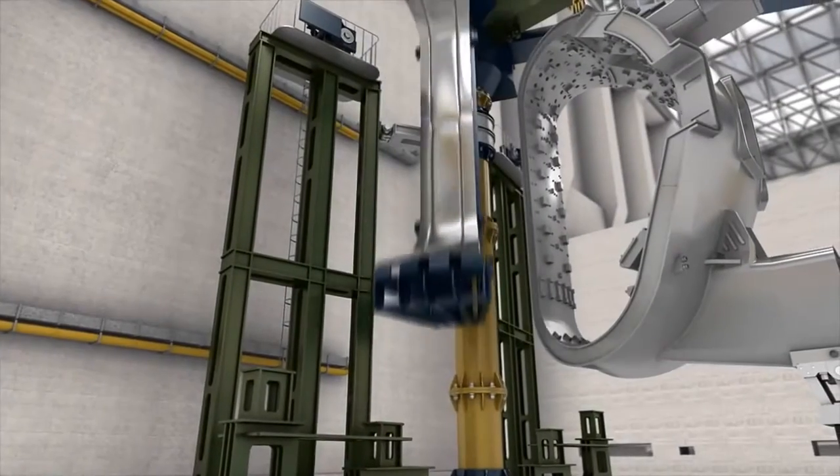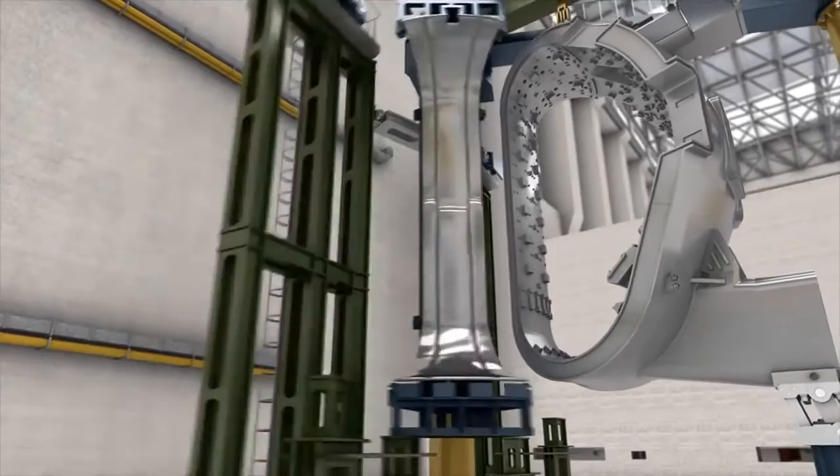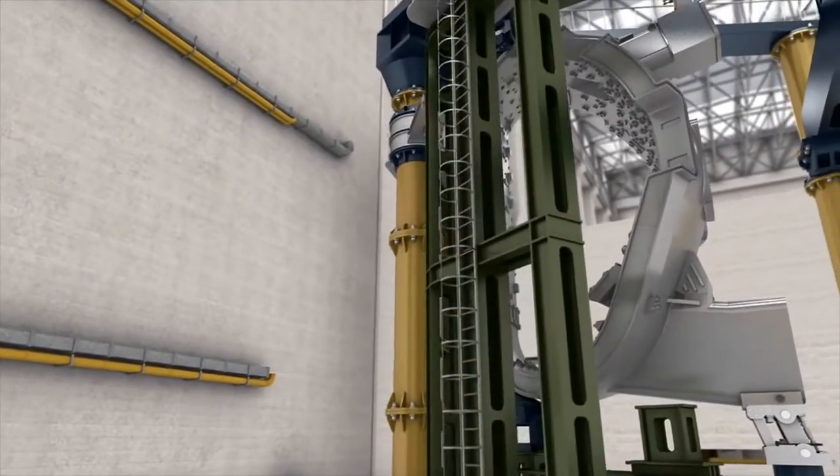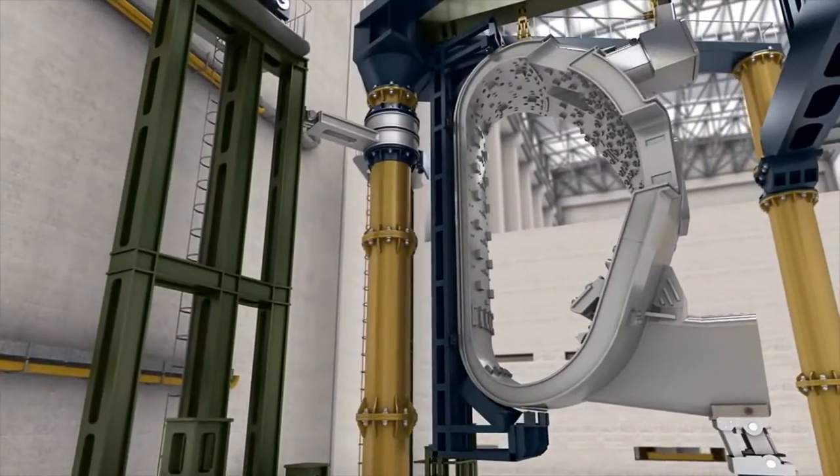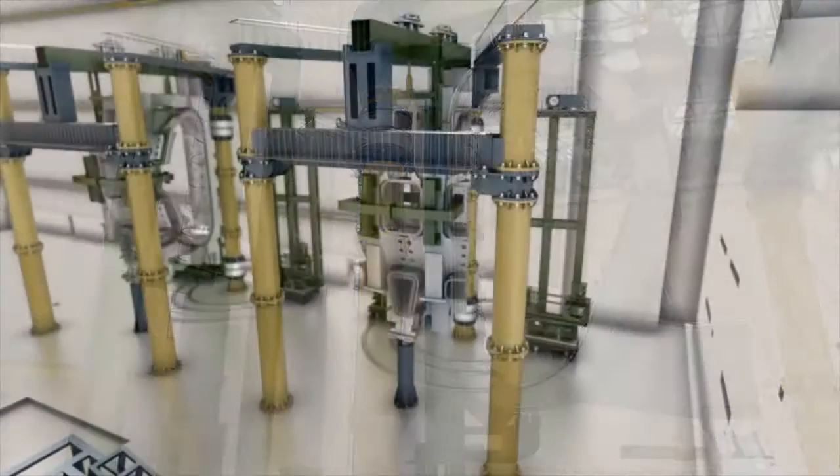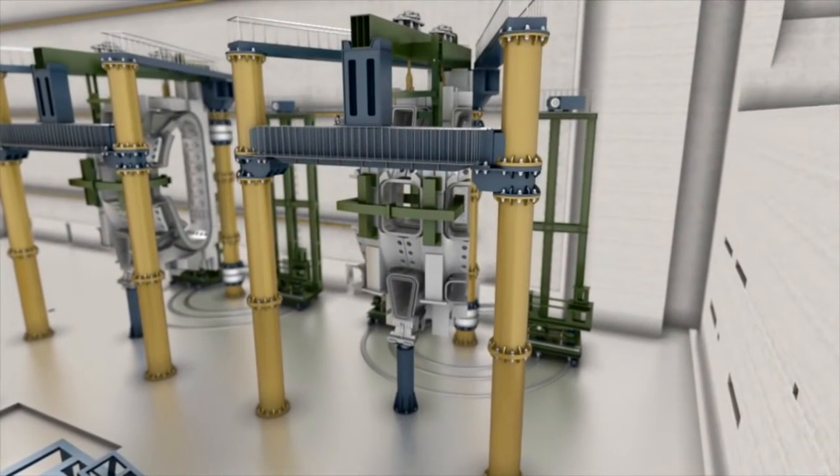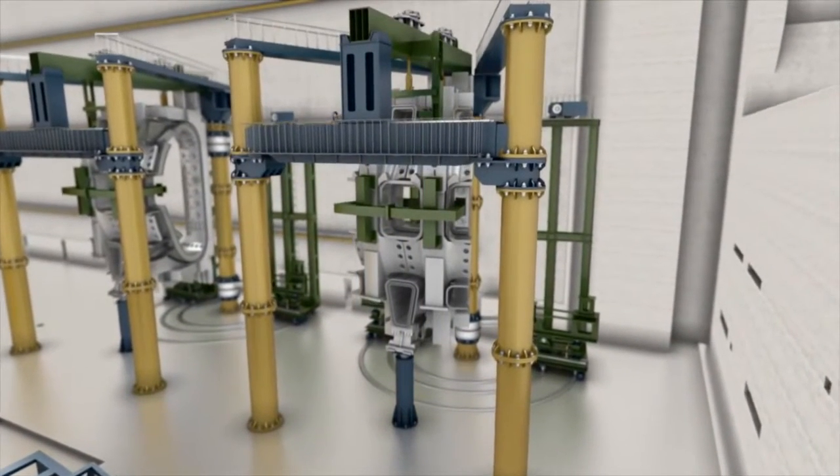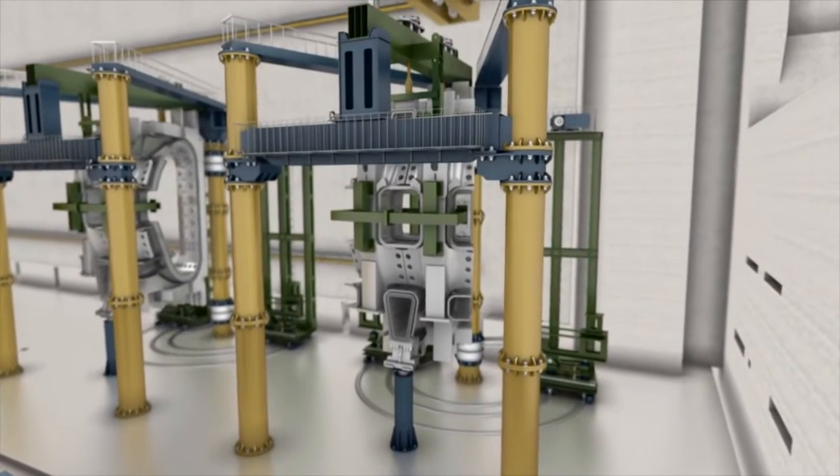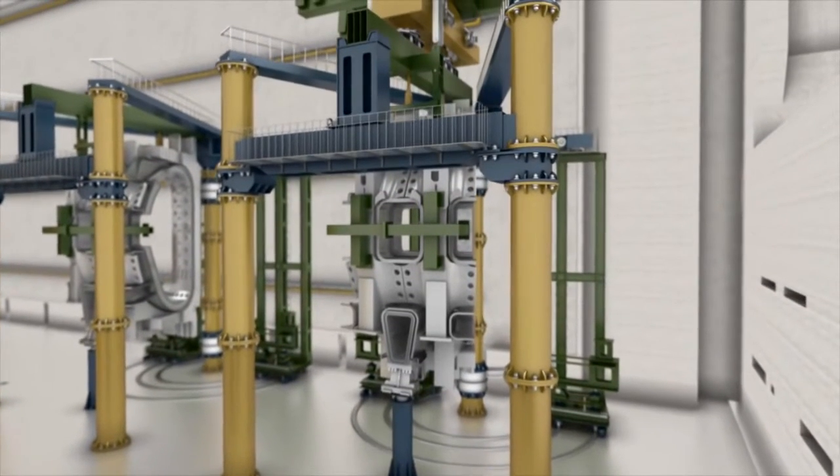While the cryostat is being assembled in the tokamak hall, parallel activity is in full swing in the assembly hall. It's here where the sub-assembly of the 940 degree sectors is being prepared, each set made up of a vacuum vessel sector, the surrounding thermal shields, and two toroidal field coils.